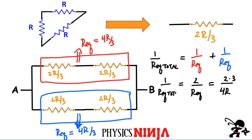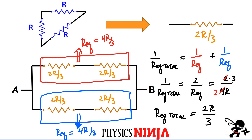So my R equivalent total at the end of the day is simply going to be 2R divided by three. That was a nice problem where you have to combine resistors in series and parallel, and at the end we get 2R divided by three. If the value of the resistance was, for example, 10, we can easily calculate that it would be 20 over three.